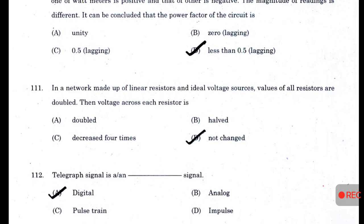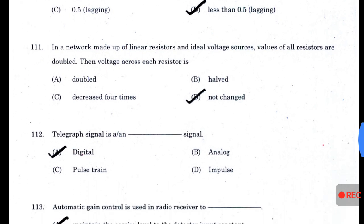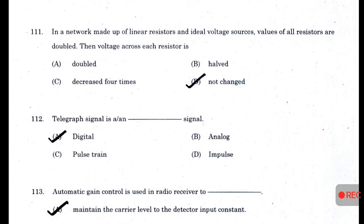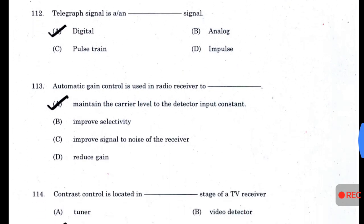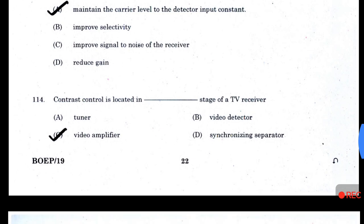In a network made up of linear resistors and ideal voltage sources, if values of all resistors are doubled, the voltage across each resistor is not changed. A telegraph signal is a digital signal. Automatic gain control is used in a radio receiver to maintain the carrier level to the detector input constant. Contrast control is located in the video amplifier stage of a TV receiver.